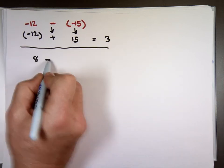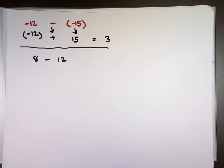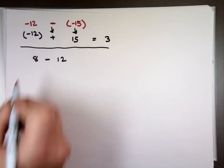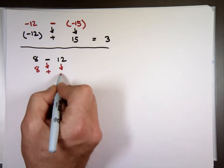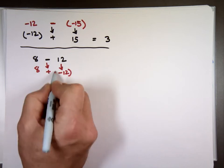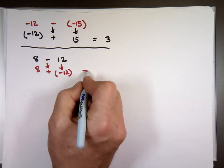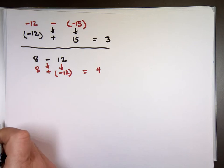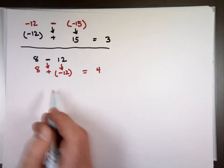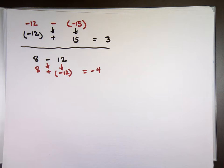Another one: 8 minus 12. The answer is negative 4. Why negative 4? It's 8 plus negative 12. Subtract the smaller from the larger — 8 from 12, which is 4. And what's the sign of the number with the larger absolute value? Negative. Very good.